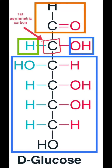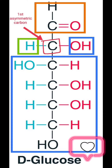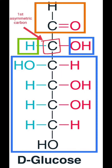Whereas the second carbon is the first asymmetric carbon atom because it is bonded to four different groups. As you can see in the orange box, the top part is considered as one group, the OH group is one group, H is one group, and the remaining part is a different group. That is why we call it an asymmetric carbon atom.